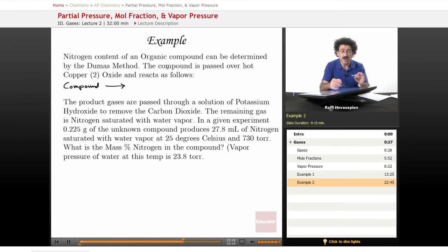The nitrogen content of an organic compound can be determined by the Dumas method. The compound is passed over hot copper oxide and reacts as follows. So I'm going to go ahead and write the reaction. You take the compound, you pass it over hot copper oxide, and you end up producing nitrogen gas, CO2 gas, and water vapor.